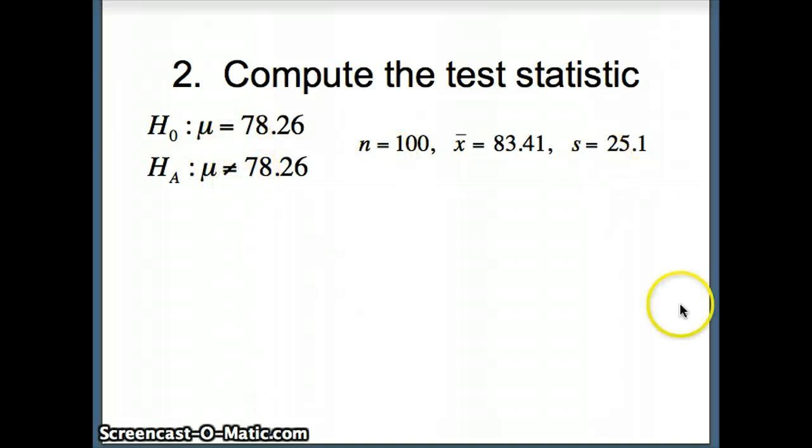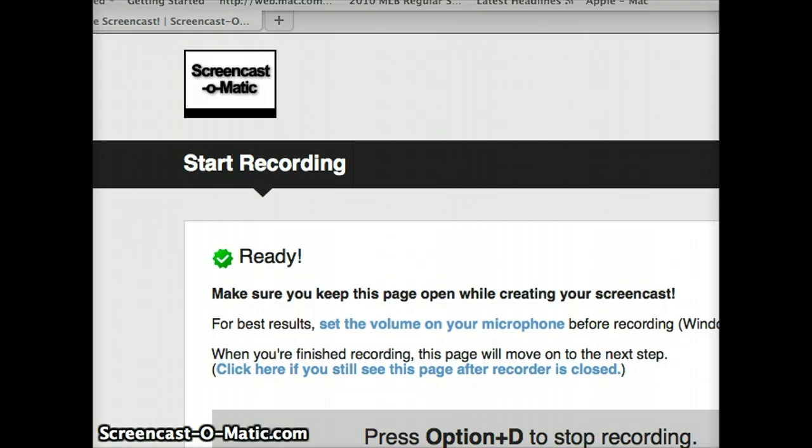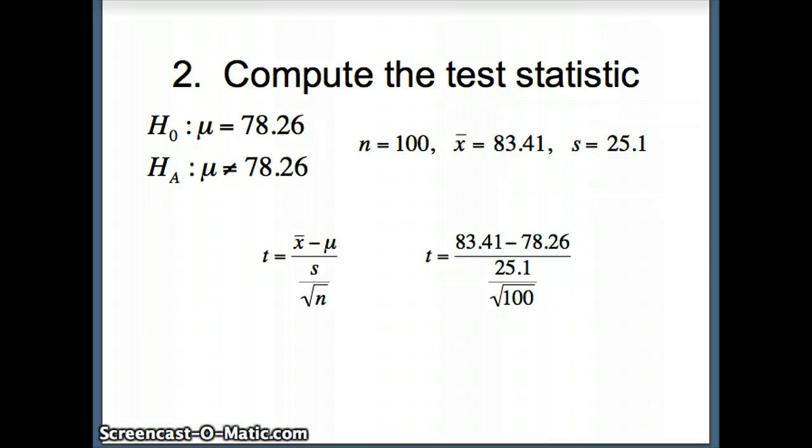There's our H naught and H A, and our statistics. To compute the test statistic t, we take X bar minus mu divided by s over root n, over root 100. We'll do that computation in Excel. I type X bar 83.41, mu 78.26, standard deviation 25.1, n is 100. The test statistic t is automatically computed as 2.052.